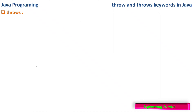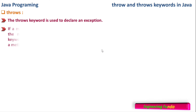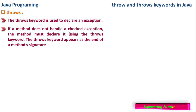The second keyword is throws. The throws keyword is used to declare an exception. If a method does not handle a checked exception, the method must declare it using the throws keyword. The throws keyword appears at the end of the method signature. If you don't want to handle the exception within the method, you can declare that the method is throwing the exception outside using the throws keyword.